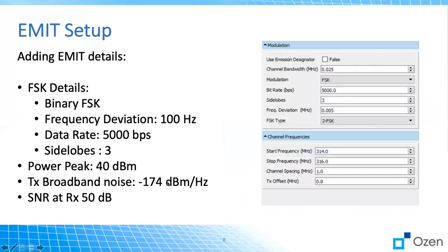Once we did that, we moved to the next step, which is putting some numbers. For this simulation, we used the binary FSK, as we mentioned. The frequency deviation 0.05, we chose three slope, you can choose five or seven if you want. Bit rate 5,000, the channel bandwidth is 0.25 megahertz, and power peak is 40 dB, and the noise is minus 74, and SNR is 50 dB. So with this setup, we run the simulation.